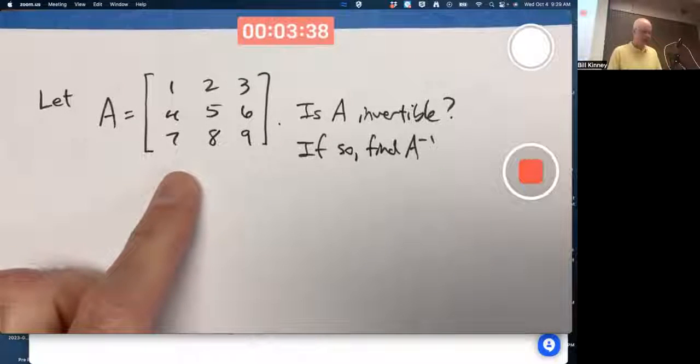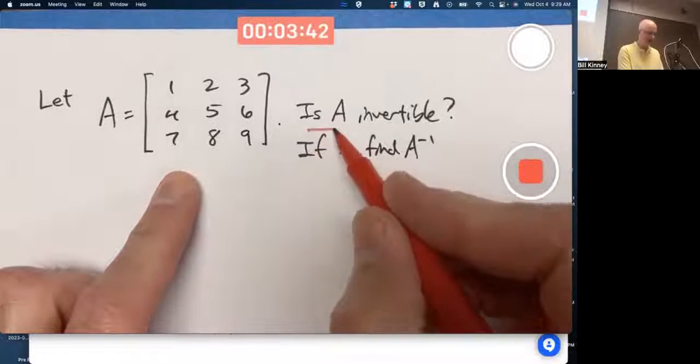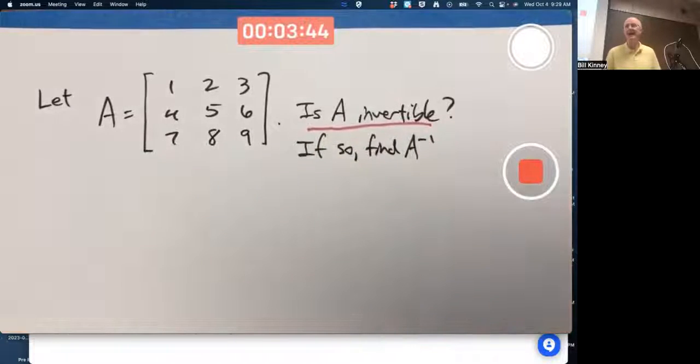So here we have a three-by-three matrix, not a very creative one, but it is an interesting one because the question, is it an invertible, turns out to be an answer of no, though you wouldn't necessarily know that just from looking at it.